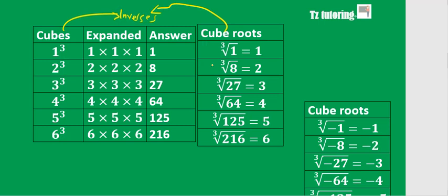If 2 cubed gives you an answer of 8, then the cube root of 8 is 2. If 5 cubed gives you 125, then the cube root of 125 will be 5.